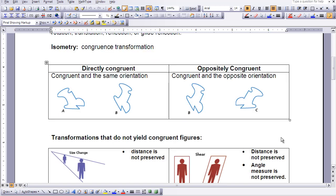Since isometries are tied to congruence, we now say that isometries can also be called a congruence transformation.